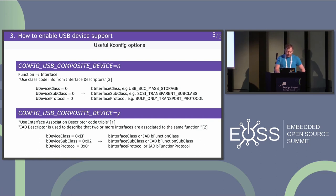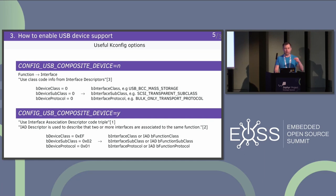The reason is that this option changes the code triple in the device descriptor to specific values that advise the host to use the Interface Association Descriptor code triple to identify which interfaces belong to a function. For CDC-ACM, there are two interfaces and the host needs to identify which interfaces belong to a function. So if you use CDC-ACM class, please enable this option so that the host — whether Windows or Linux — can identify that the interfaces belong to a specific function.